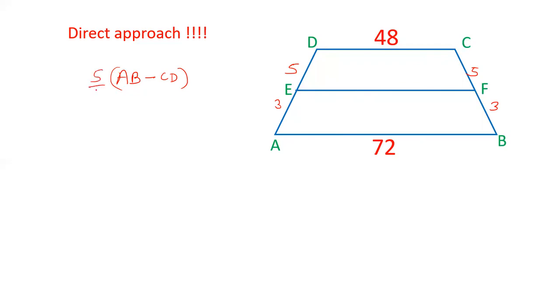So find out 5 by 8 of AB minus CD, and 3 by 8 of AB minus CD. The difference is divided in the ratio of 3 to 5. So what you have to do? If you want to find out the length of EF, then add this number. This length is 5, so add this number to CD. And the second method is 3 is from AB larger side. So subtract this value from AB. And let's check what will be the value.